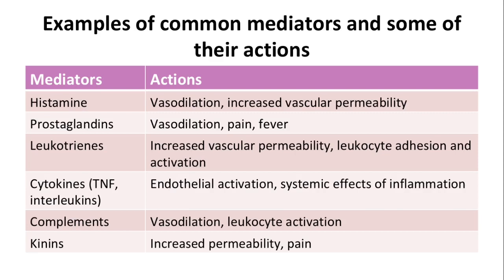Some examples of common mediators and their actions include histamine, which is involved in vasodilation and increase in vascular permeability; prostaglandins in vasodilation, mediating pain and fever, which is a systemic effect of inflammation. There are also leukotrienes, cytokines, complements, and kinins. Some of these different mediators share the same action, such as vasodilation and increased vascular permeability. Both cytokines and prostaglandins have effects on the systemic manifestations of inflammation.